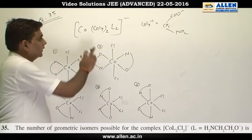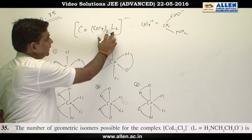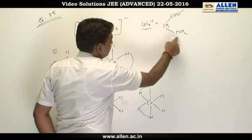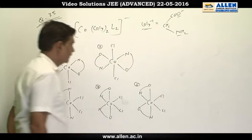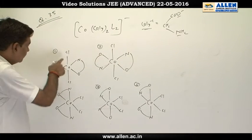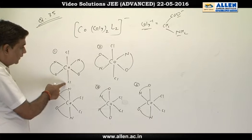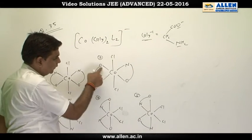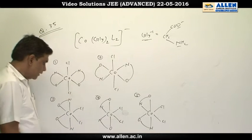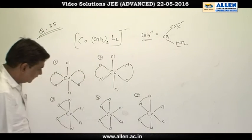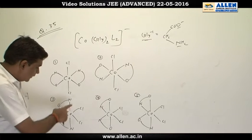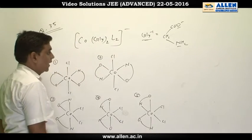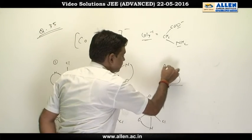In question number 35, I asked the question, CoGly halide L2, where Gly is glycine ligand, which has donor atoms oxygen and nitrogen. If we create a geometric structure, then Cl opposite Cl, or in the second level we have two Gly. One has N opposite N, another has O opposite O, and another has O opposite N. This gives 5 geometrical structures. The integer answer is 5.